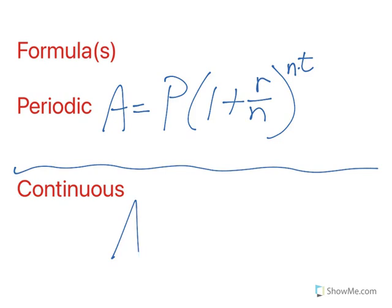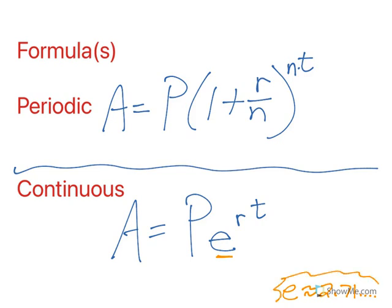Continuous is slightly different. And that's where we get into P equals E to the RT, where P is our initial principle. R is our annual interest rate. T is the number of years. E is a mathematical constant. Your calculator should have an E button. E is approximately 2.71. It goes on forever. It's an irrational number. Just use the button on your calculator.